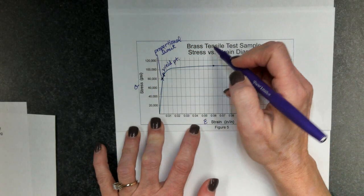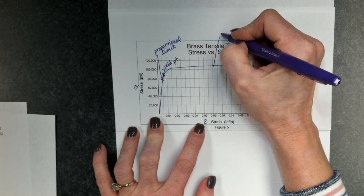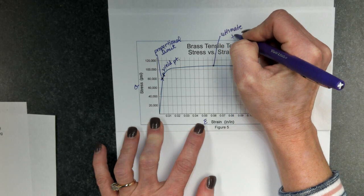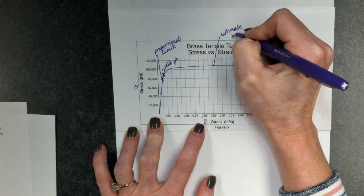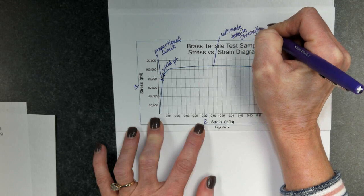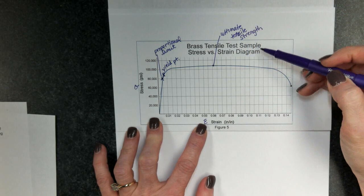And then here at the very top of the curve, this is called the ultimate tensile strength, or UTS. And this is the most stress that the material can take.